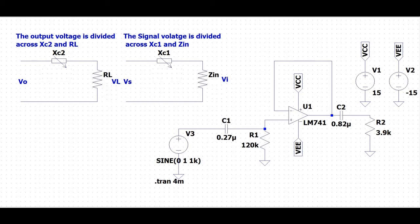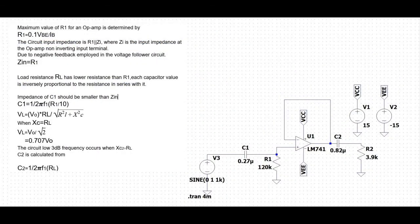The largest possible resistor values are normally selected to ensure minimum circuit power dissipation and minimum current demand, while the smallest possible capacitor values are used for their small physical size. The maximum value of R1 for an op-amp is determined by a specific equation. The circuit input impedance is R1 in parallel with Zi, where Zi is the input impedance at the op-amp non-inverting input terminal.